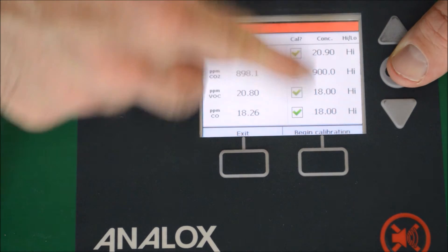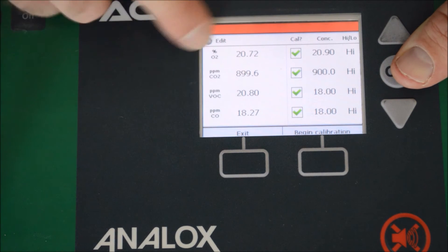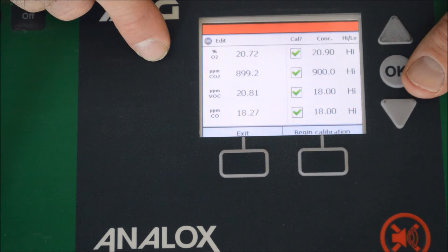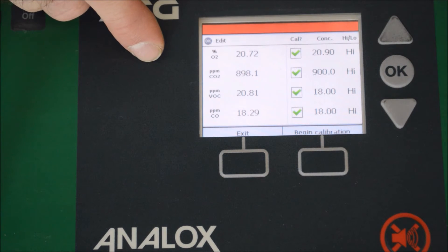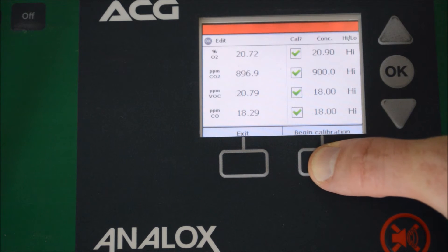We need to check that the calibration concentrations are the same as what we have on the bottle, and these, as we mentioned before, are our live gas readings. Because we've had it running for five minutes, it's stable, we can now continue with the calibration. So we need to press begin calibration.